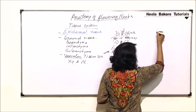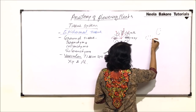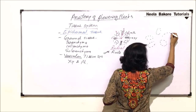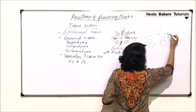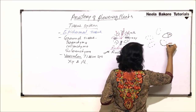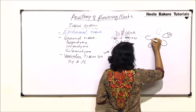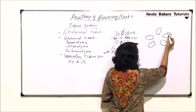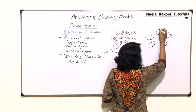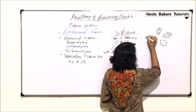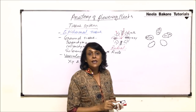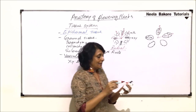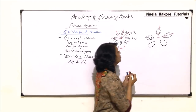Now if we make vascular bundles where xylem and phloem are together, the outer part is phloem and inner part is xylem — these are called vascular bundles because xylem and phloem, the vascular tissues, are present together in the form of a bundle. Phloem is outside, xylem is inside. Now if xylem and phloem are both on the same radius, such arrangement is known as conjoint arrangement.